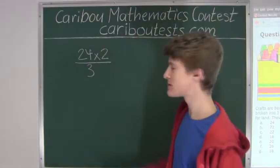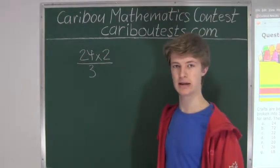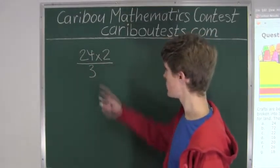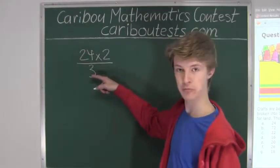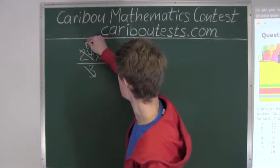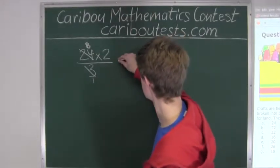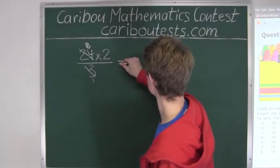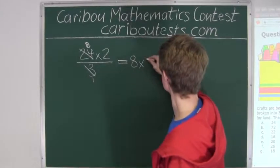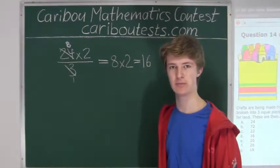So now instead of just multiplying this out and having to deal with a large number, we will make it easy on ourselves and just cancel out whatever we can. Now we can cancel out the 24 and the 3 to just 8 and 1. So this is equal to 8 times 2 and that is equal to 16. So we need 16 blue crayons.